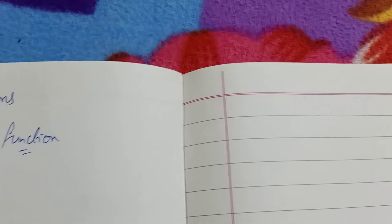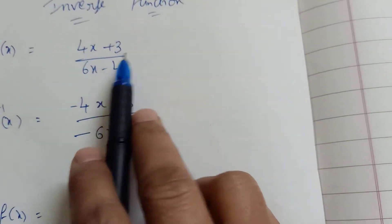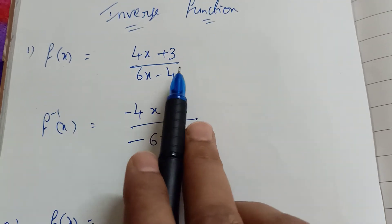Now, let me show you an example. If f of x equals 4x plus 3 by 6x minus 4, we apply the trick.